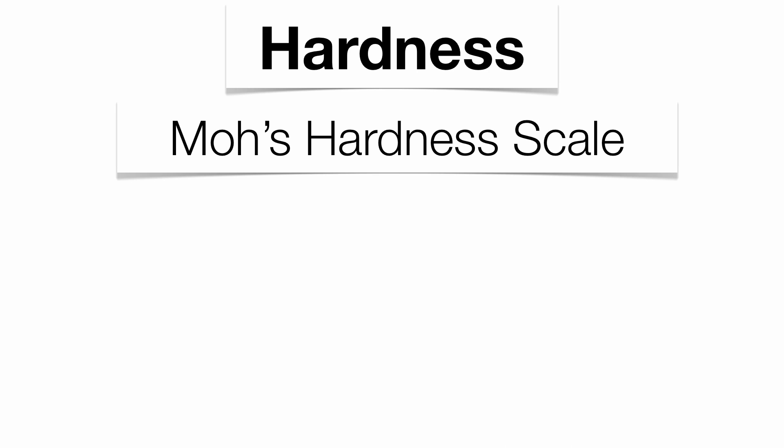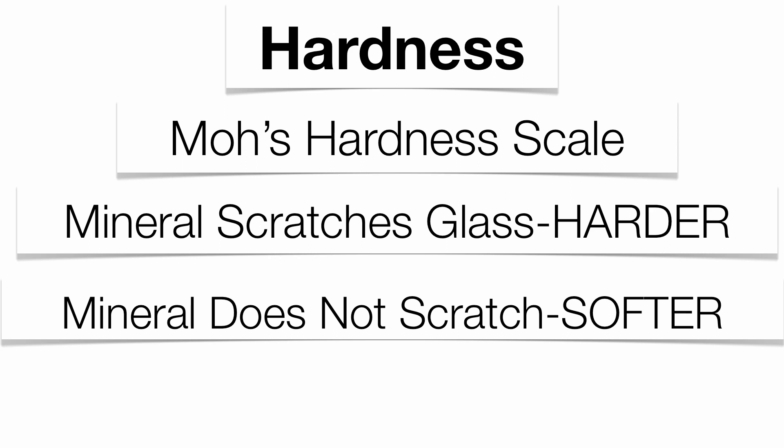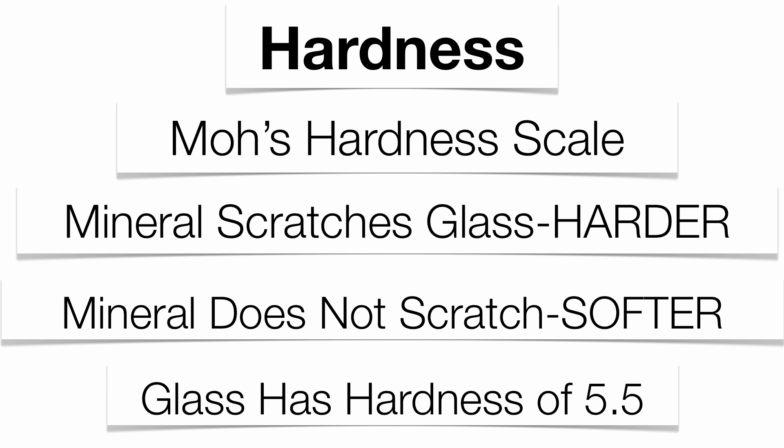In earth science, we're only going to focus on glass. If your mineral scratches glass, it means the mineral sample is harder. If the mineral sample does not scratch glass, it means that mineral sample is softer. On Mohs hardness scale, glass has a hardness of 5.5. So if your mineral does not scratch glass, it's less than 5.5; if it does scratch glass, that mineral sample has a hardness of greater than 5.5.